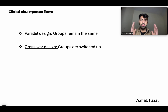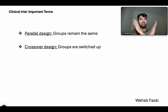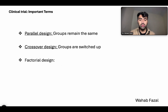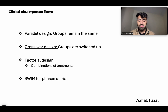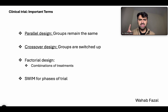Crossover design means groups are switched halfway through — the control group starts receiving treatment and the treatment group starts receiving placebo. Factorial design tries all possible combinations of treatments, like A+B, B+C, and A+C. For the phases, remember SWIM: S is it safe, W does it work, I is it better than our placebo or usual standard of care, and M is where we do the post-marketing analysis.